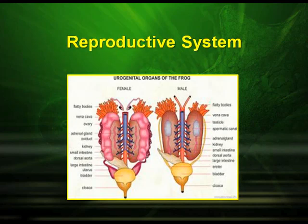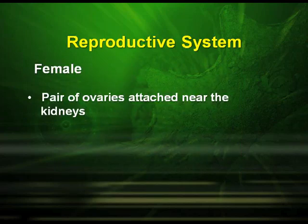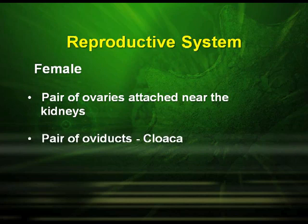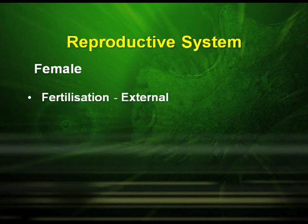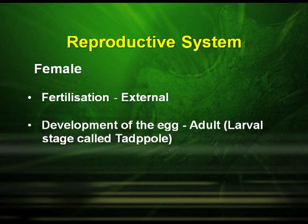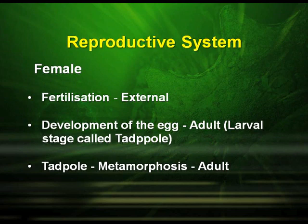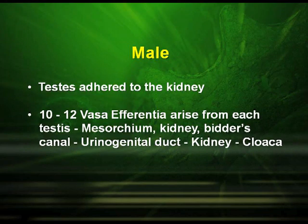Reproductive system of frog: the females have a pair of ovaries which are attached near the kidneys, and a pair of oviducts. The mature female lays about 2500 to 3000 eggs at a time. They have external fertilization, and the development from egg to adult includes a larval stage called the tadpole stage. The tadpole undergoes metamorphosis and develops into an adult. The male reproductive system includes the testes, which are adhered to the kidney. They have about 10 to 12 vasa efferentia which arise from each testis, passing to the mesorchium, the kidney, Bidder's canal, the urinogenital duct, kidney and cloaca.